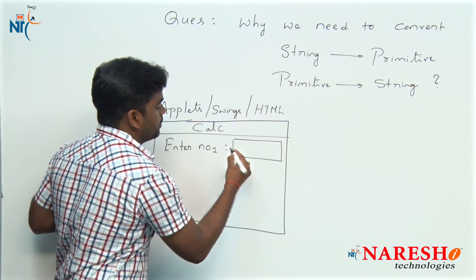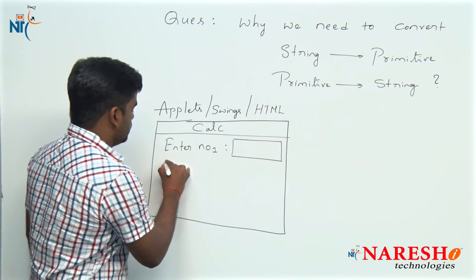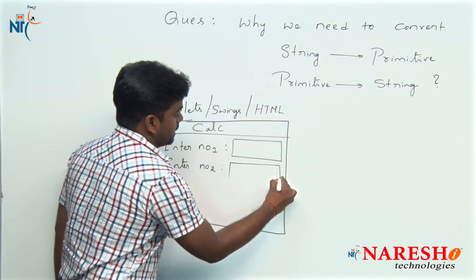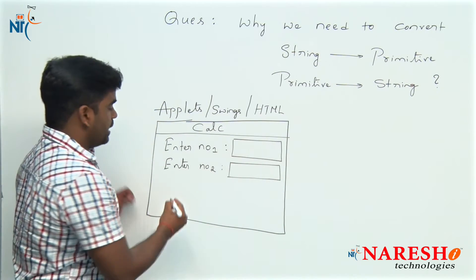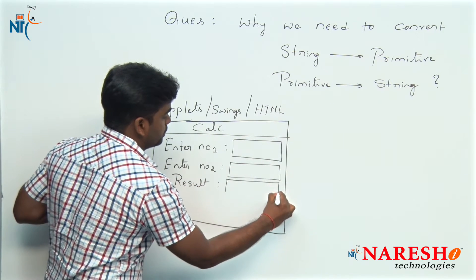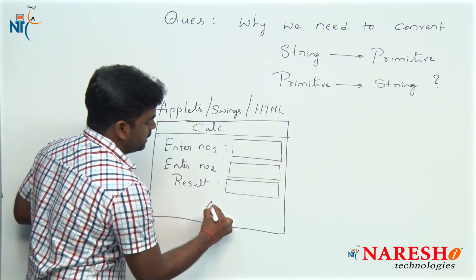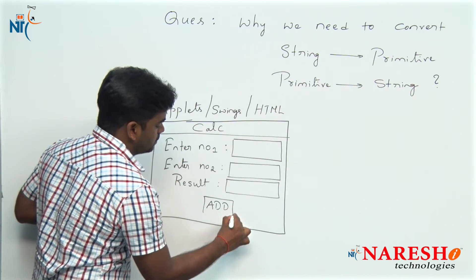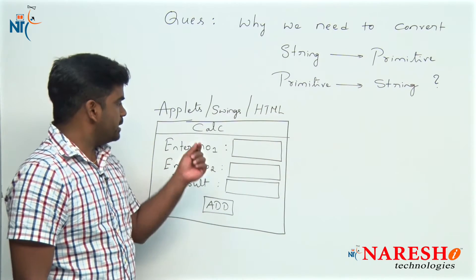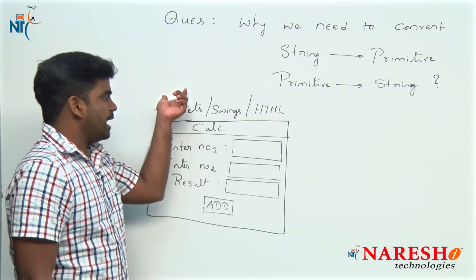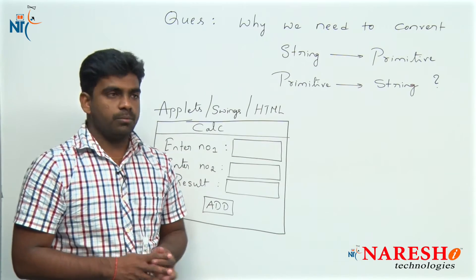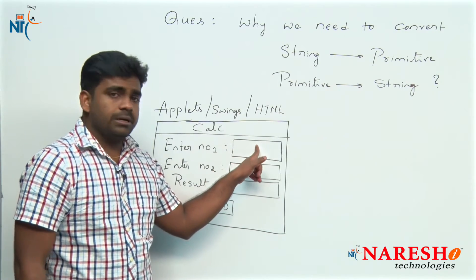There is one input field to enter a number, next a label and a field to display the result, and just one button — the Add button. This is the simple design of the calculator. This input box is what we call a text field.